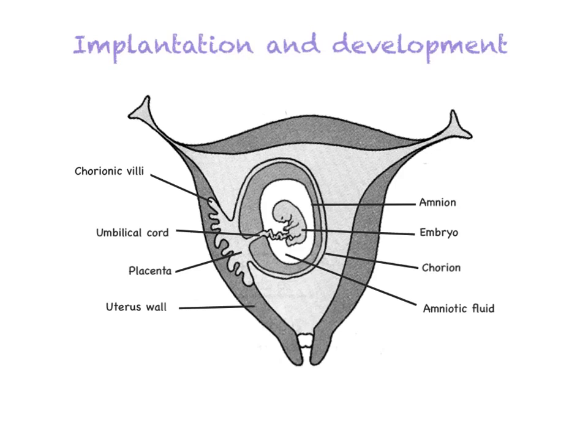We look at some structures called extra embryonic membranes. Extra embryonic membranes means they are outside of the embryo — they surround the embryo. We have two extra embryonic membranes. The outermost membrane is called the chorion, which is the outer amniotic membrane, and it also forms structures that are embedded into the uterine wall called chorionic villi.